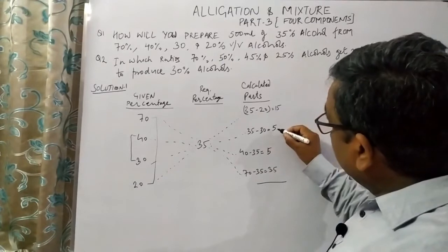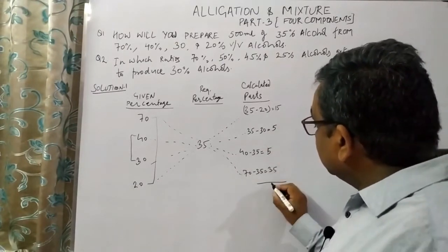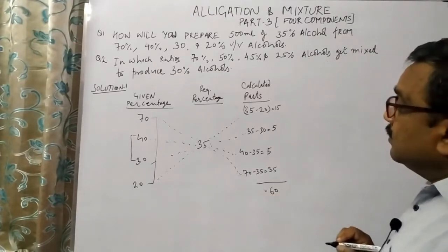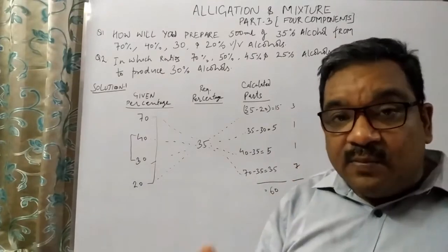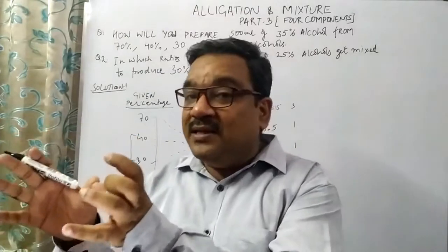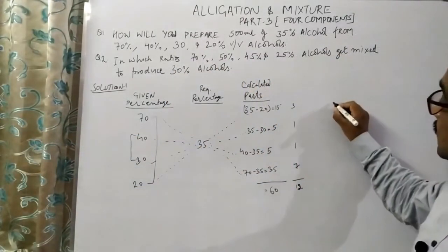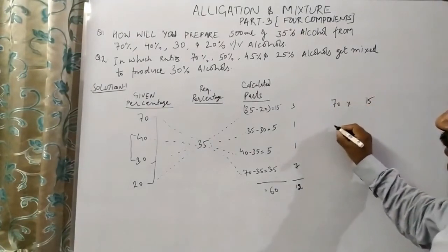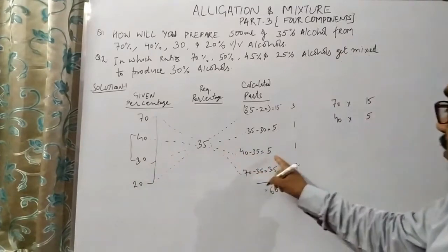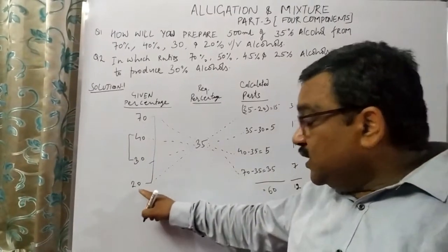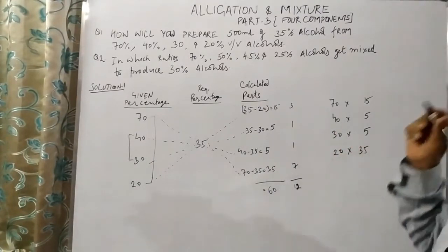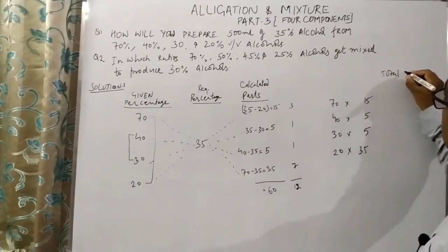So how many total parts are there? Total parts are 15 plus 35 plus 5 plus 5, which is equal to 60. Now in weighted mean principles, how do we apply this? It is calculated by the proportion of each percentage alcohol. 70% alcohol requires 15 parts, 40% requires 5 parts, 30% requires 5 parts, and 20% alcohol requires 35 parts. So these are the total weighted parts.